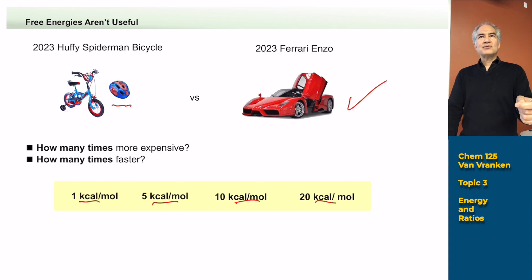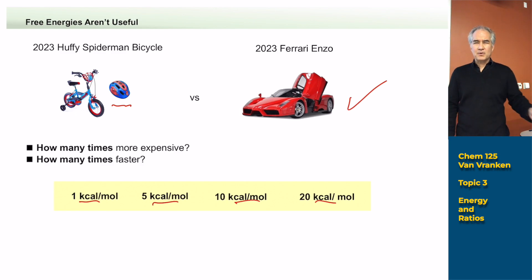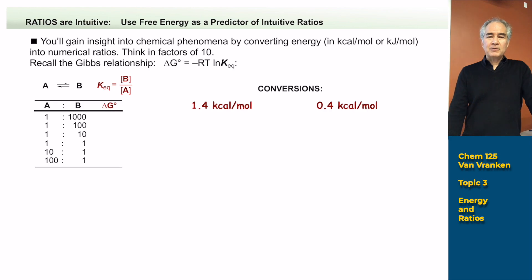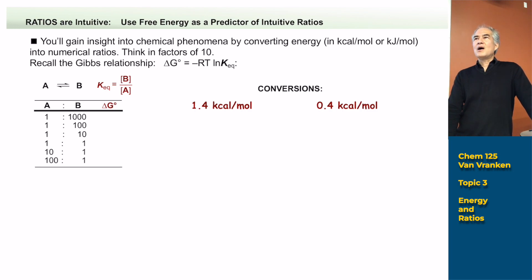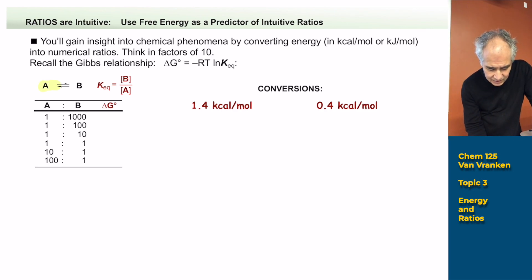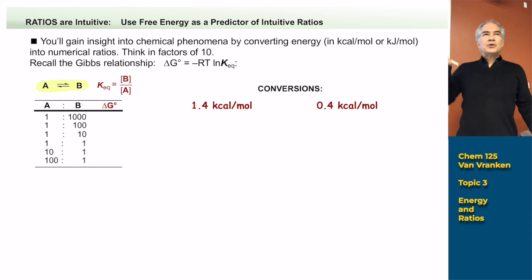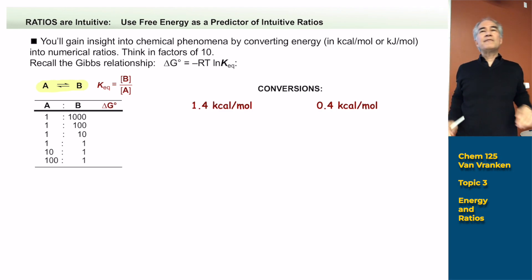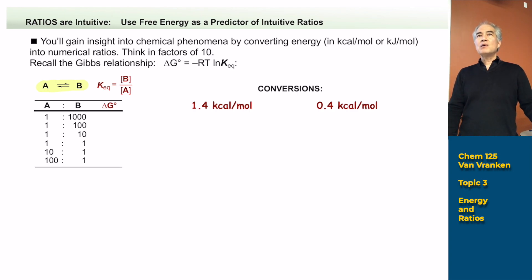We're going to use the Gibbs relationship, which I hope you've all been exposed to before. I'm not really good at math, so let me show you how I work this equation. The basics are that any time you have two things in some sort of equilibrium or competition — A in equilibrium with B, or A and B both forming competitively — those are the two situations we're interested in: which thing happens faster, and which thing is more stable once it does form. I'll tell you about those in kcals per mole.